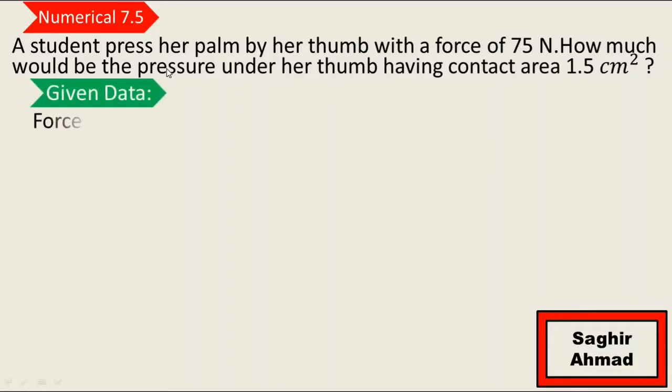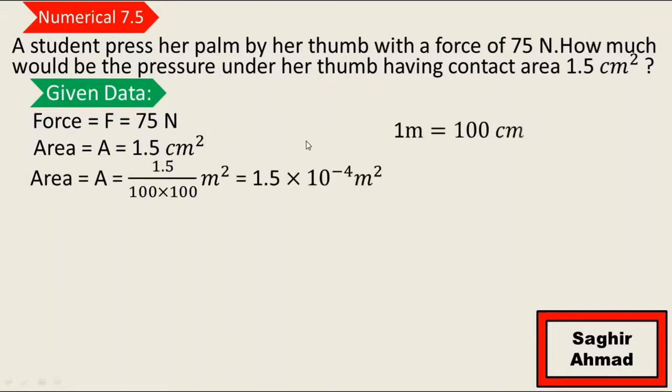So first of all we write the given data. Force is given, that is 75 Newtons, and area is given, that is 1.5 cm². We need to convert this unit to meters.